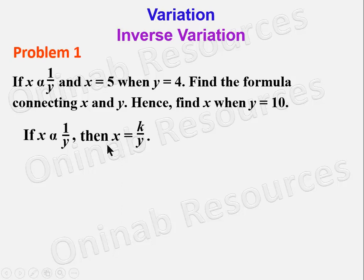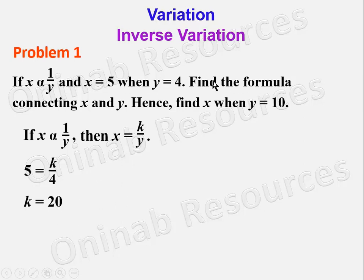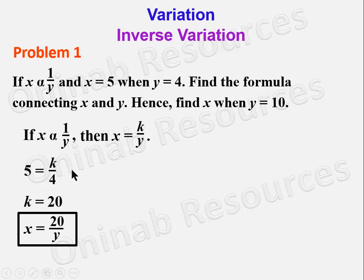When x = 5 and y = 4, we substitute to get 5 = k/4, so k = 5 × 4 = 20. We now find the formula connecting x and y by substituting k = 20 into the relation, giving x = 20/y. That is the formula connecting x and y.